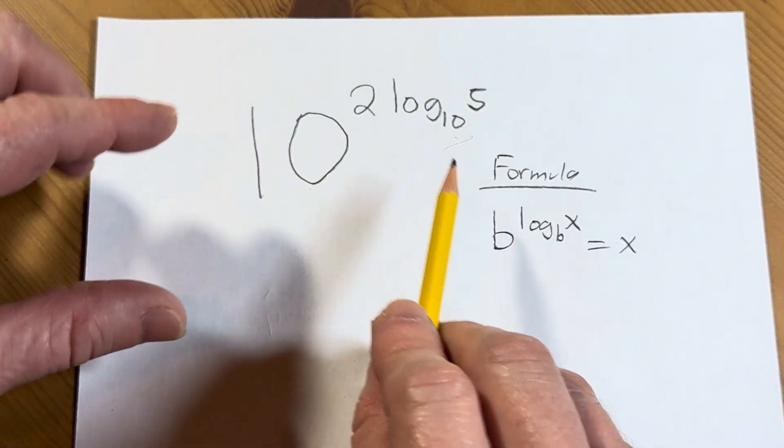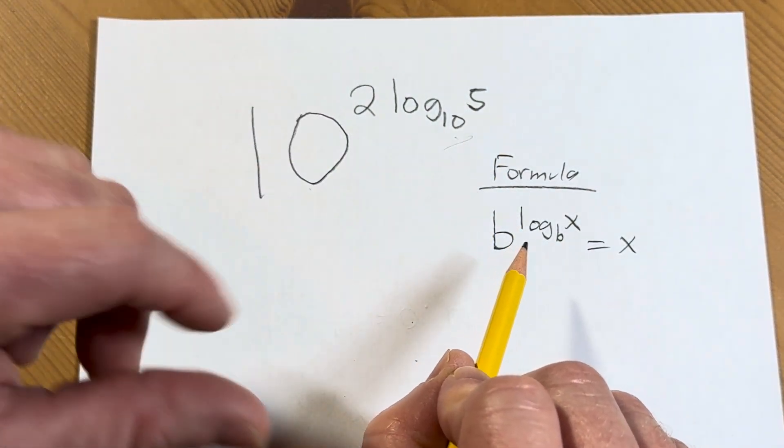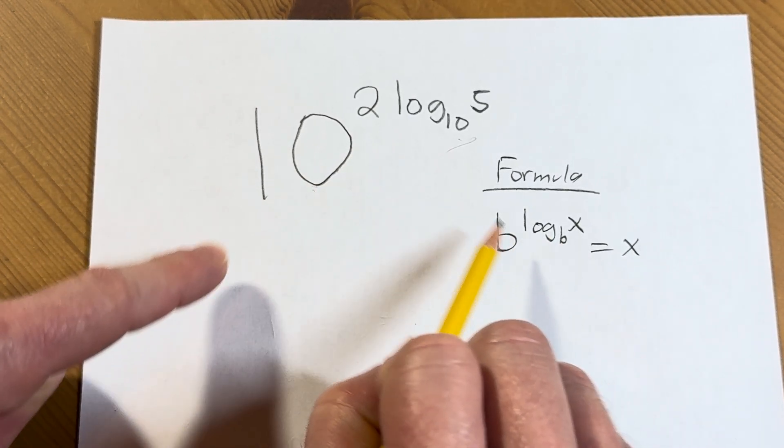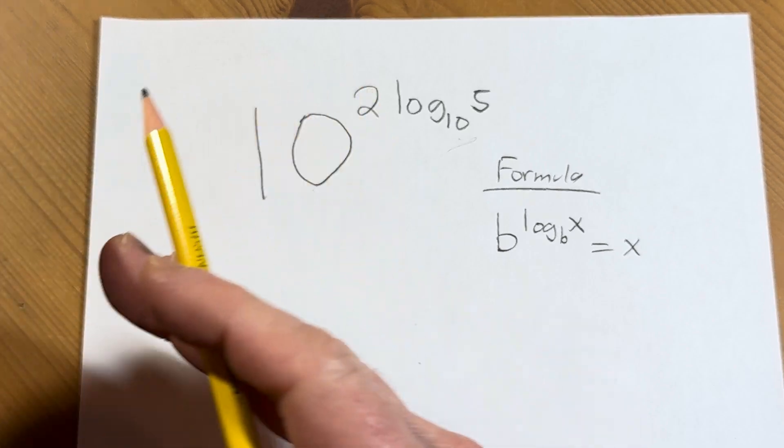And so we're almost at a position where we can use this formula. Before we can use this formula, though, there's a problem. You notice we've got the b. The b is 10. The x is 5. There's the 2. So how do you get rid of the 2?